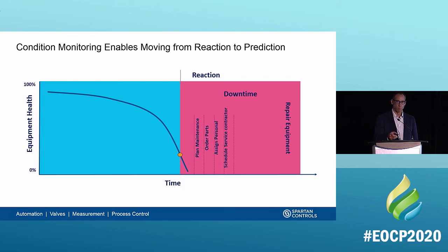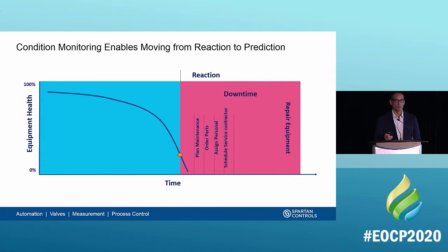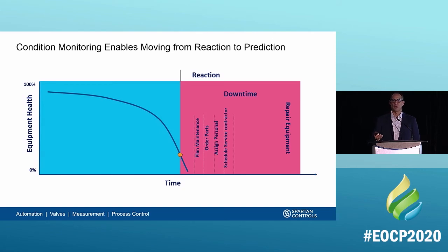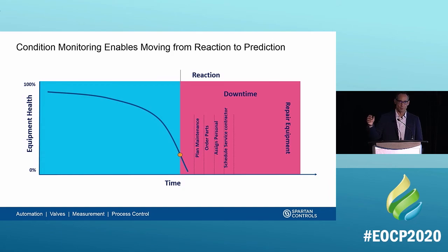From the point of failure we have to schedule people, get parts, remove the equipment, affect the repair, and put it back into service. Another important point about this curve is not just the failure itself, but the performance correlation: as that fault gets worse, the performance of that machinery degrades. A good example is a heat exchanger — as it fouls, we must expend more and more energy to maintain the output temperature. So as the fault condition increases, performance degrades as well.